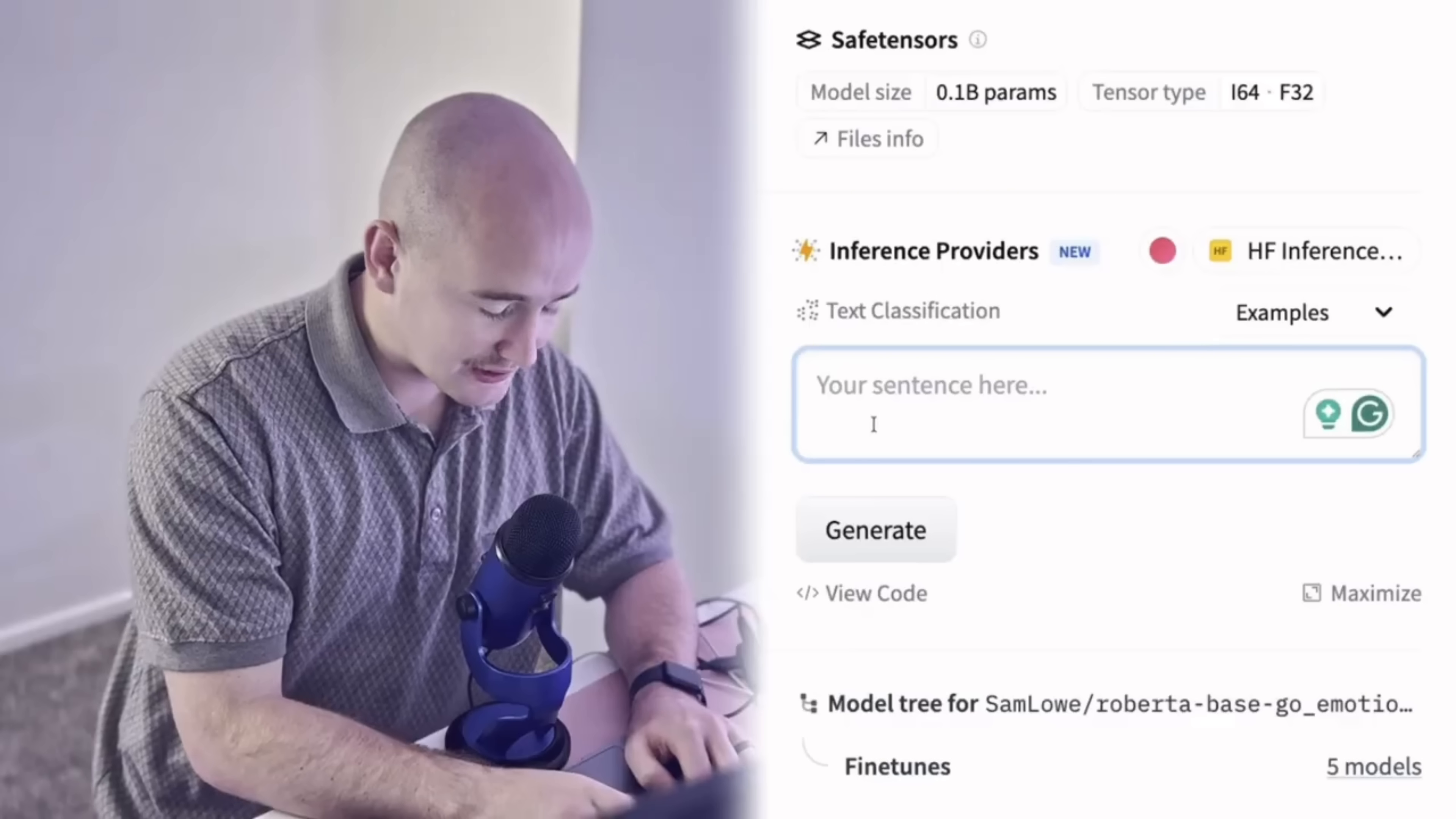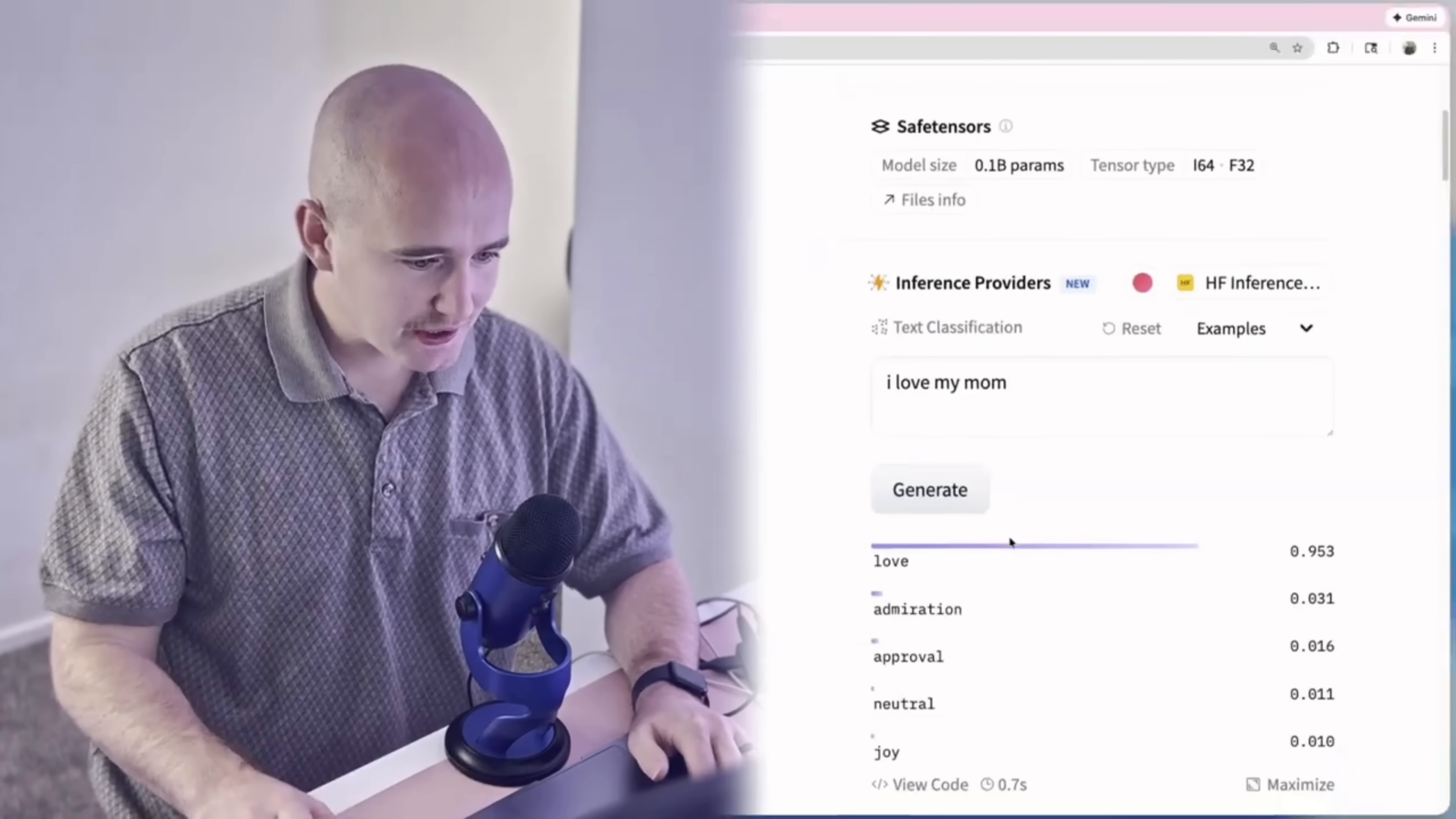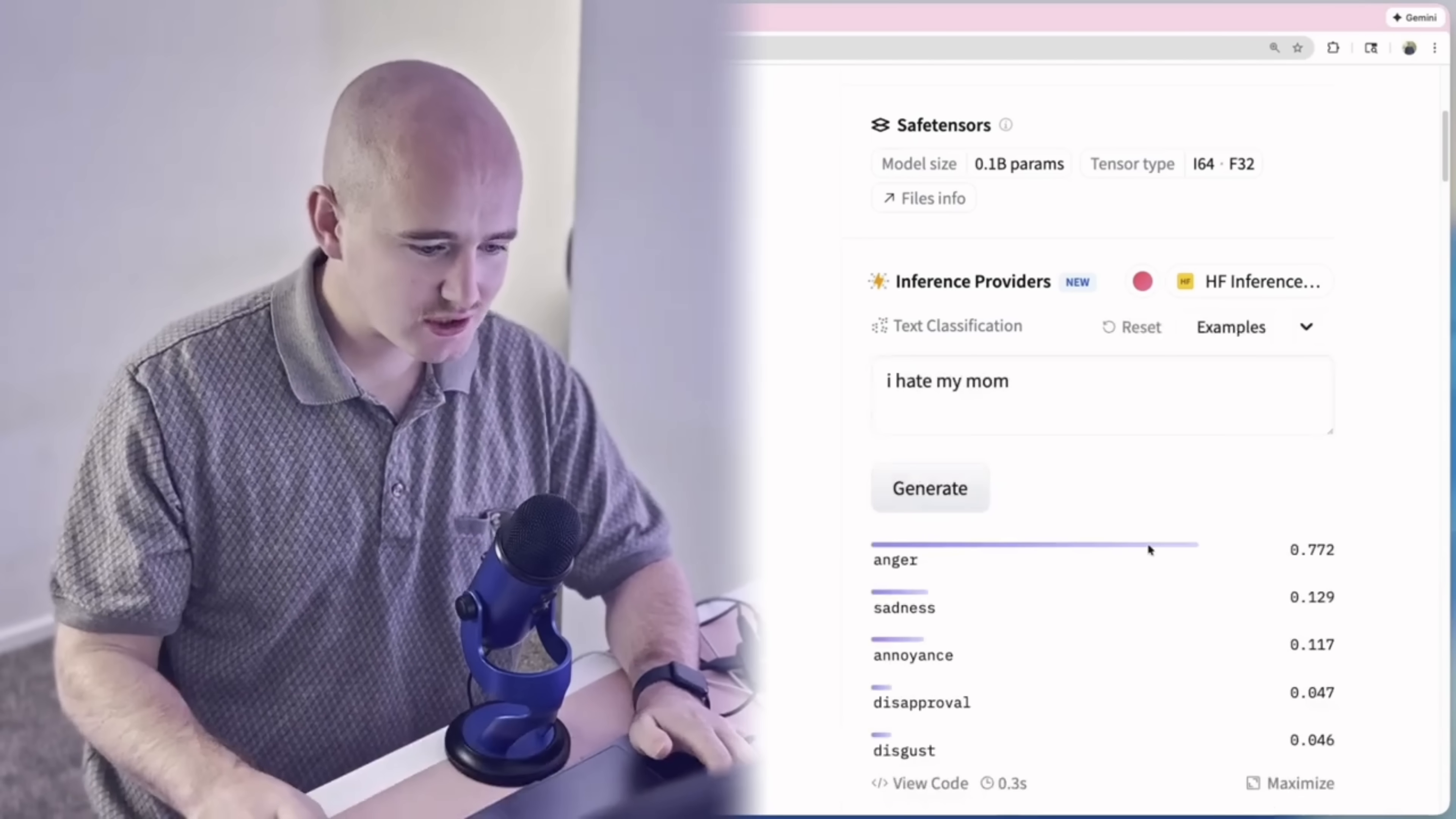And so basically what it does is that you're able to input any text. And so I'll just say, for example, I love my mom. And that's actually able to classify the emotions in this sentence. And so you'll see right here that love is the primary emotion that's being displayed. Alternatively, if I say I hate my mom and I click generate, you'll see that anger is the primary emotion. And so we're going to use this model and give a score to each verse in all of the different texts. And then we'll be able to aggregate that data all together and get some insights.